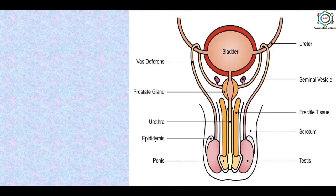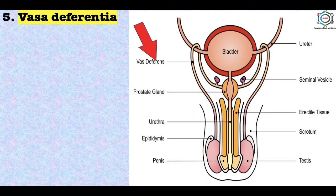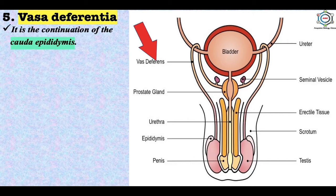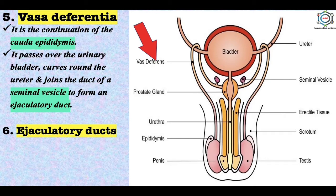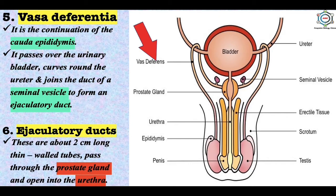The vas deferens is 40 cm long and quite stout. It is a continuation of the cauda epididymis, passes over the urinary bladder, curves around the ureter, and joins the duct of the seminal vesicles to form an ejaculatory duct. The ejaculatory duct is formed by the union of the vas deferens with the duct of the seminal vesicles. These are about 2 cm long thin-walled tubes that pass through the prostate gland and open into the urethra.